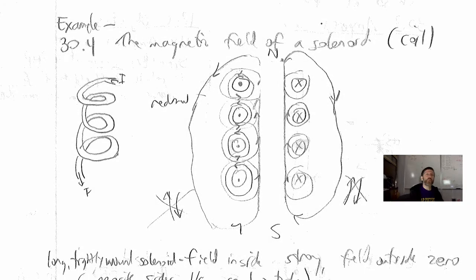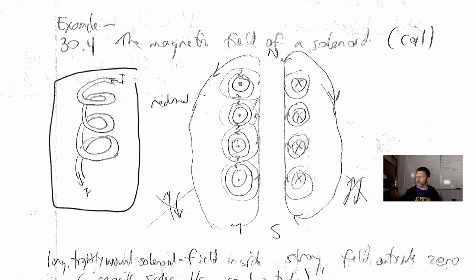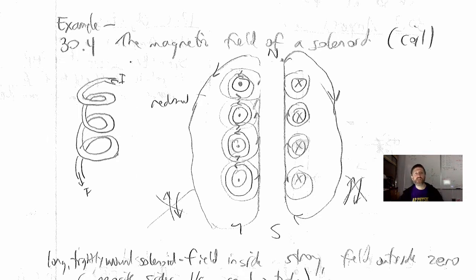What we're going to do now is derive the equation for the magnetic field inside a current-carrying solenoid. We're looking at a cross section of a coil. Here's a picture of what I'm trying to express — a current goes in one end and comes out the other, and what we're doing is looking at that cross section.